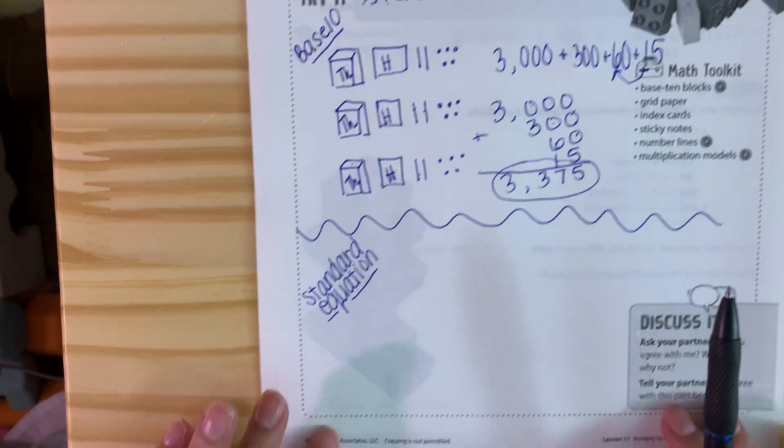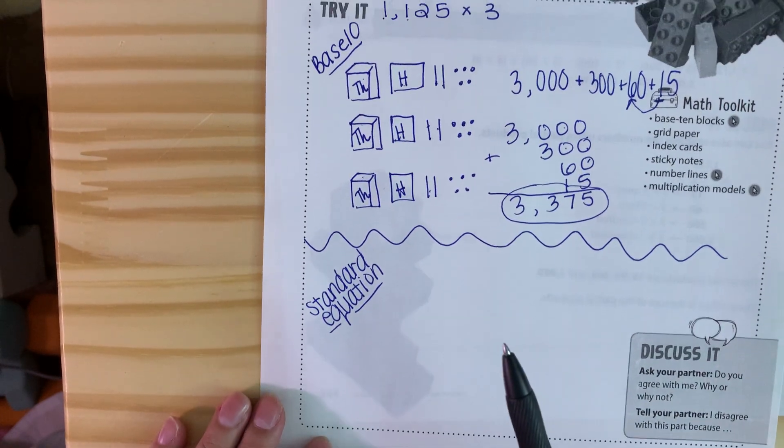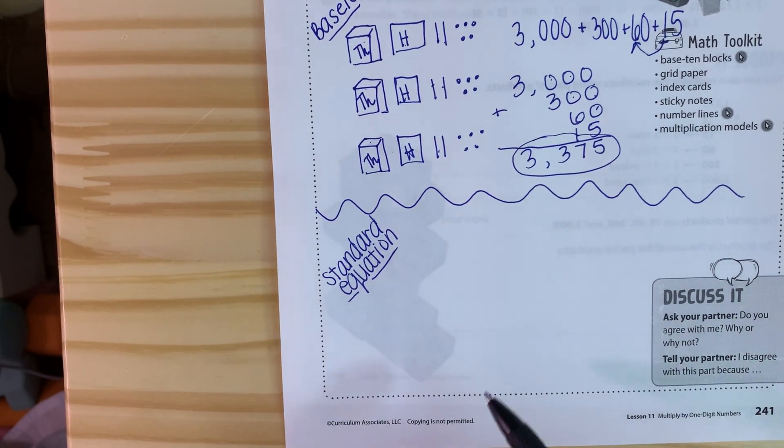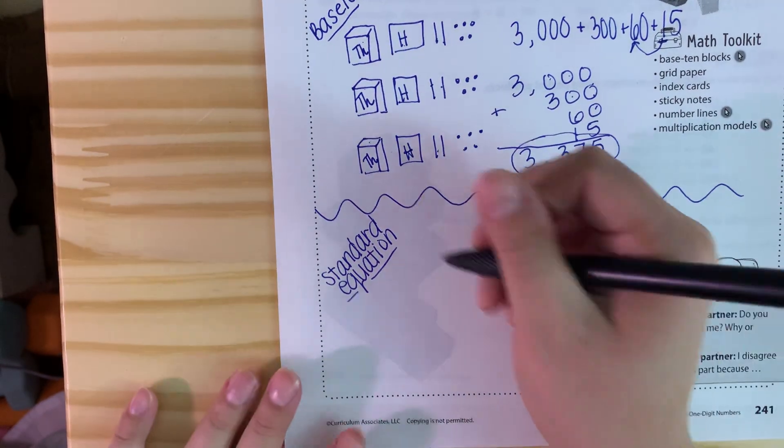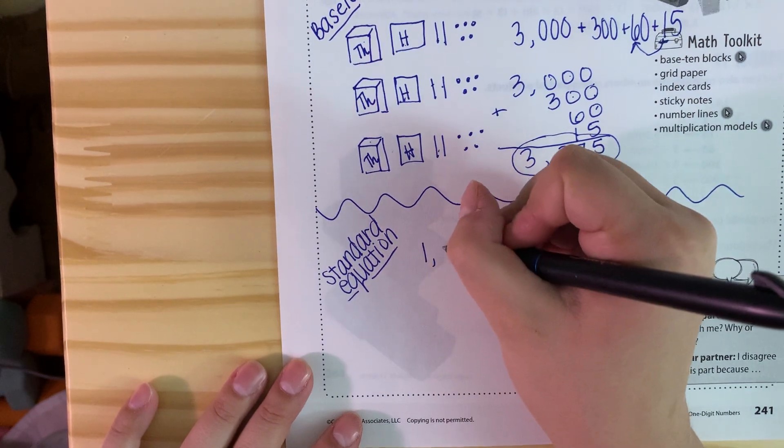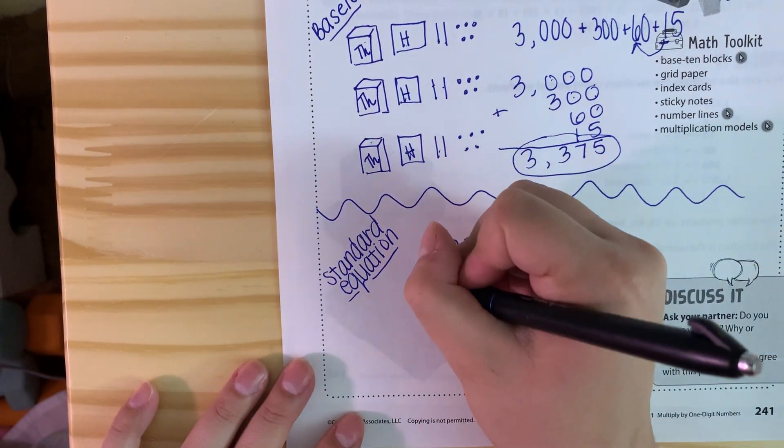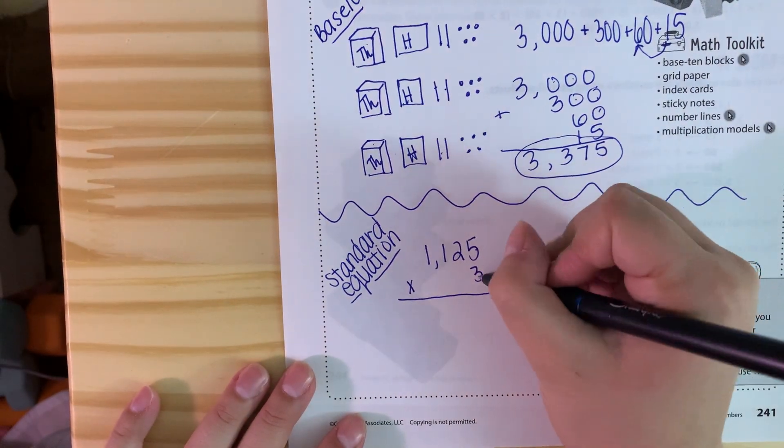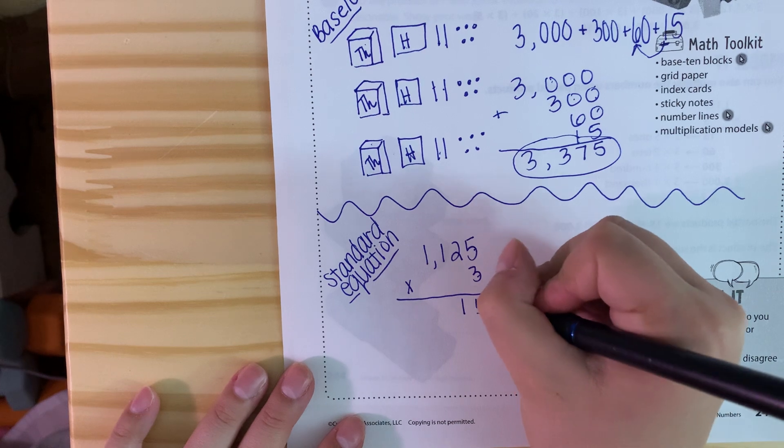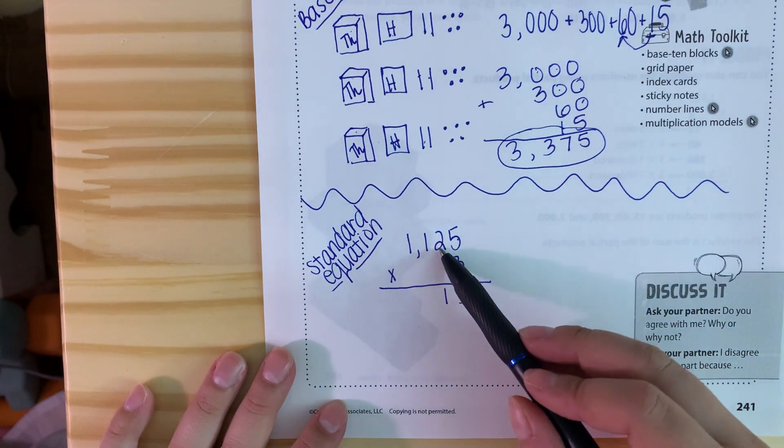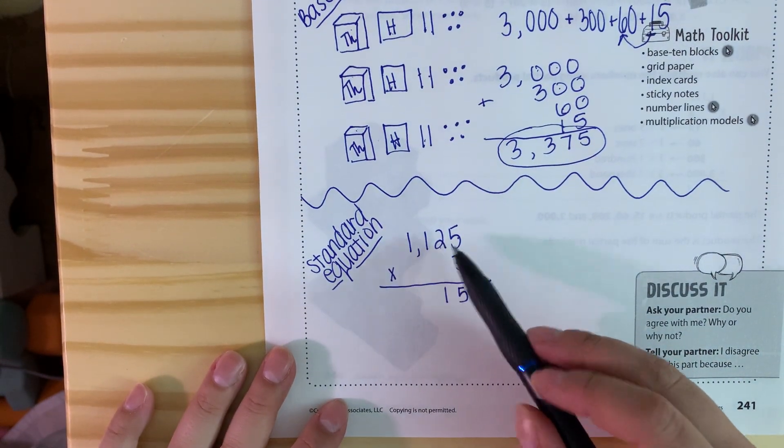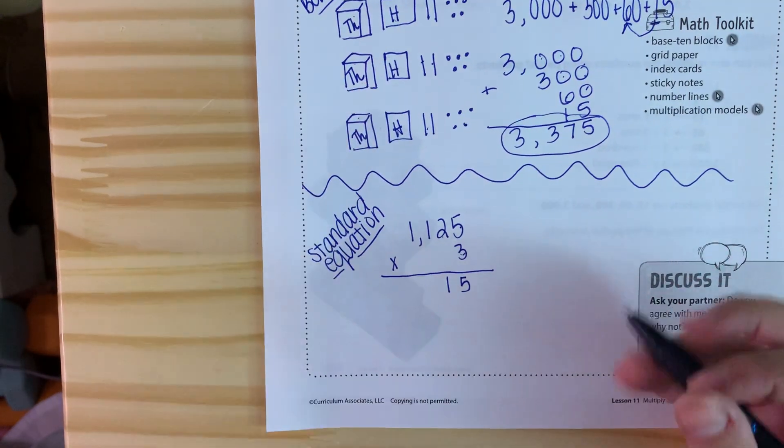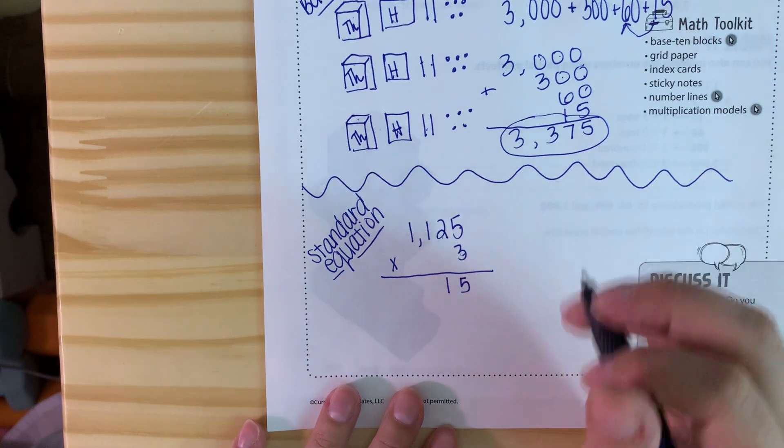Now that's using the picture, but down here we're going to talk about solving it using the expanded form idea that we talked about yesterday. So we're going to stack it like we saw at the end of yesterday's video. So 1,125 times 3. So 5 times 3 is 15. 3 times 20. Remember this isn't a 2, it's in the tens place, so it's like saying two tens.